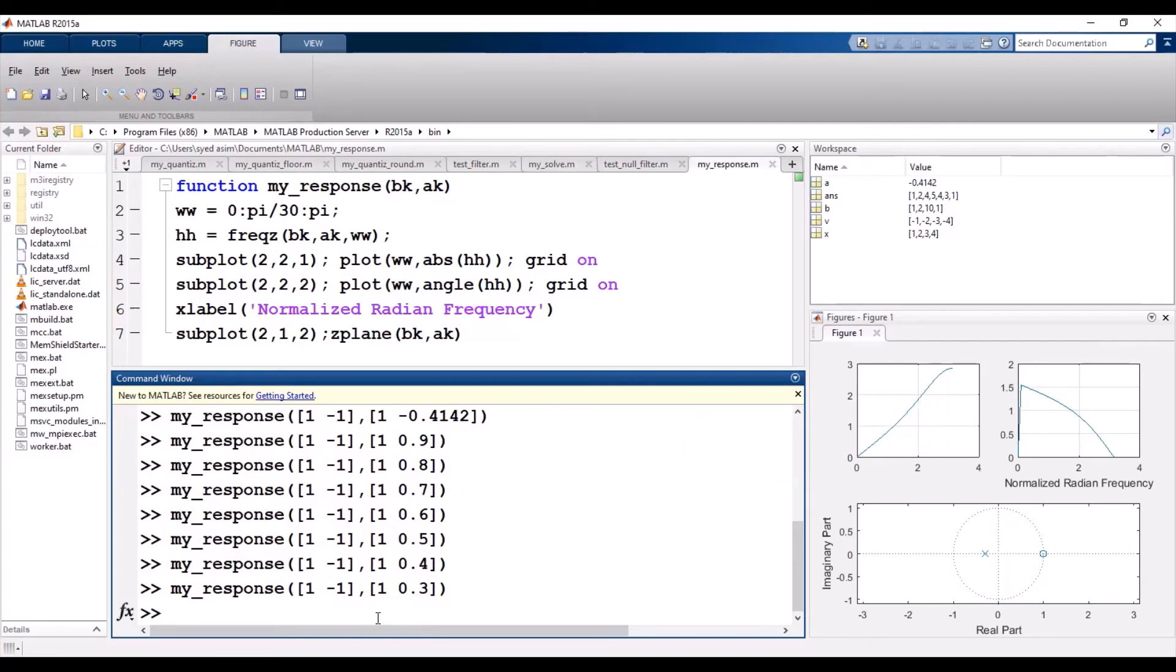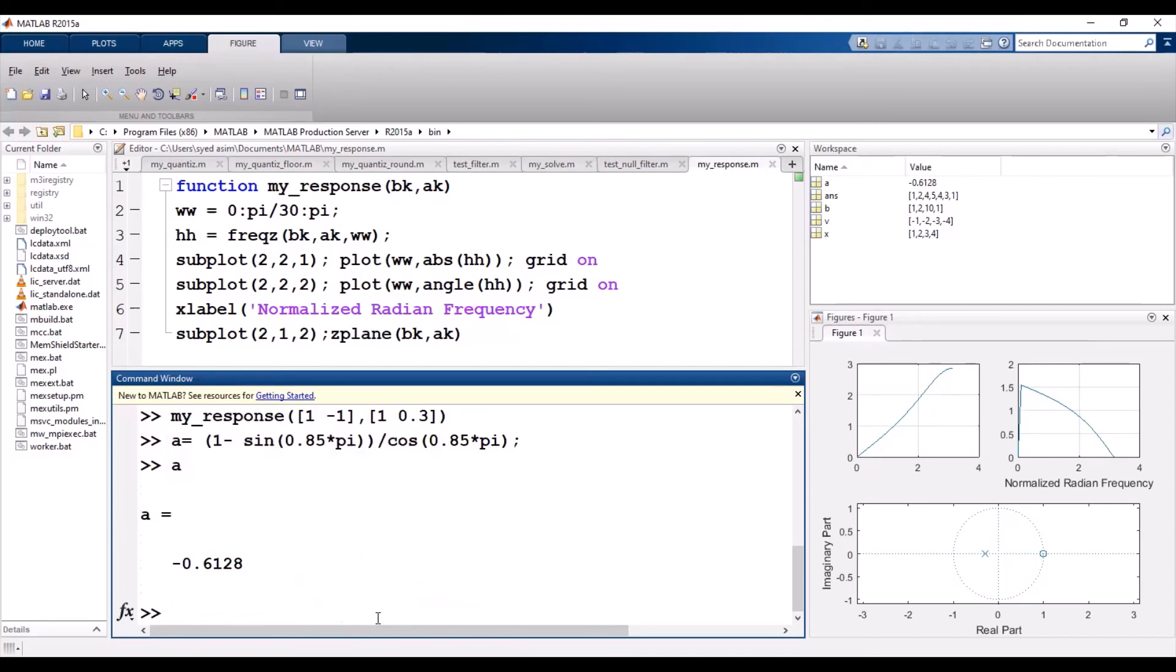So that is basically our IIR high pass filter. It is very simple and easy. If you want to design another filter with a different cutoff frequency, you can also change that value. For example, 0.85*pi. Here we need to change the value of a. You just need to put these coefficient values: 0.6128. So that is basically your IIR high pass filter.